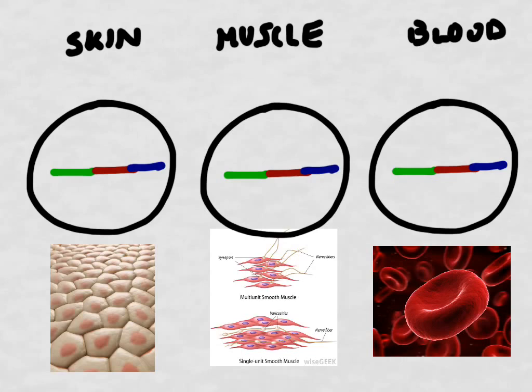These three cells are going to become skin, muscle, and blood cells. Now notice how each of these different cells has a very different shape. That's because they all are going to do different jobs.